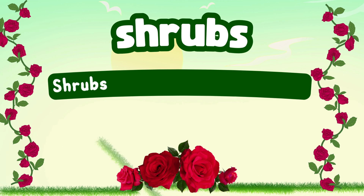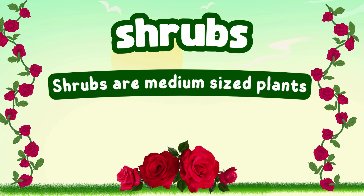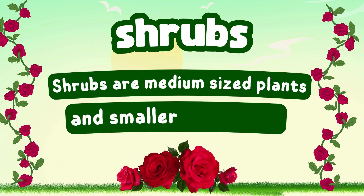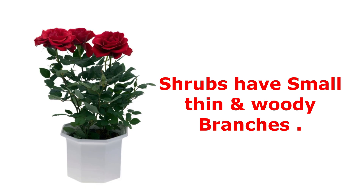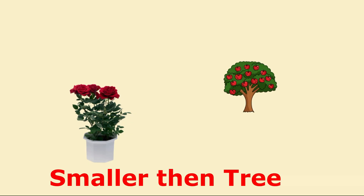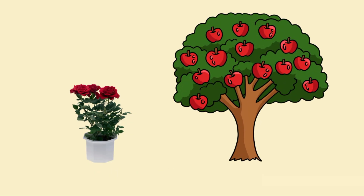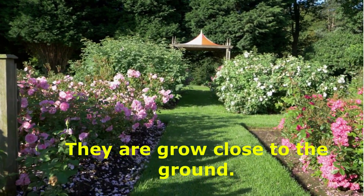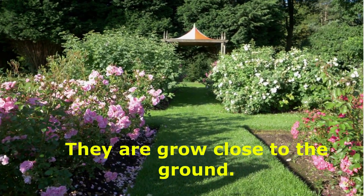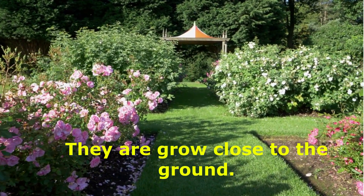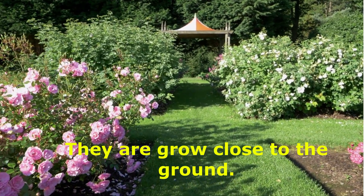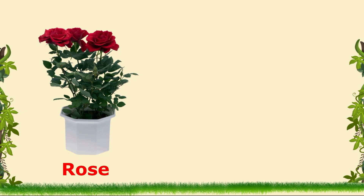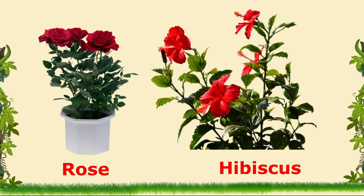Shrubs. Shrubs are medium-sized plants and smaller than trees. Shrubs have small, thin and woody branches. Some examples: rose and hibiscus. These are examples of shrubs.